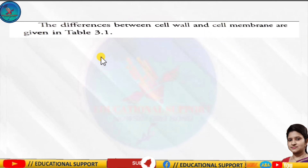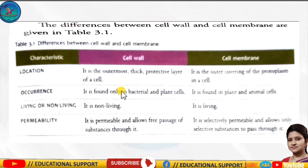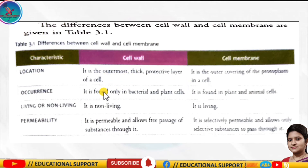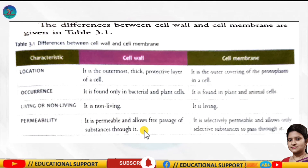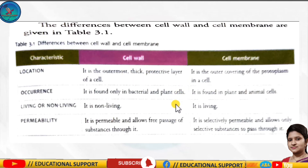The differences in Table 3.1 are very important. The cell wall is the outermost thick protective layer of a cell, while the cell membrane is the outer covering of the protoplasm. The cell wall is found only in bacteria and plant cells, but the cell membrane is found in both plant and animal cells. The cell wall is non-living; the cell membrane is living. The cell wall is permeable; the cell membrane is selectively permeable.